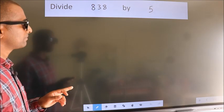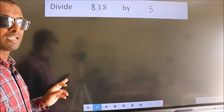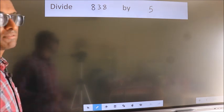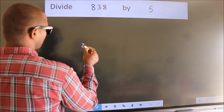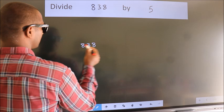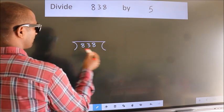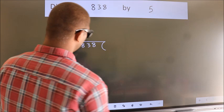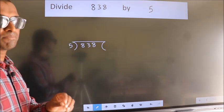Divide 838 by 5. To do this division, we should frame it in this way. 838 here, 5 here. This is your step 1.